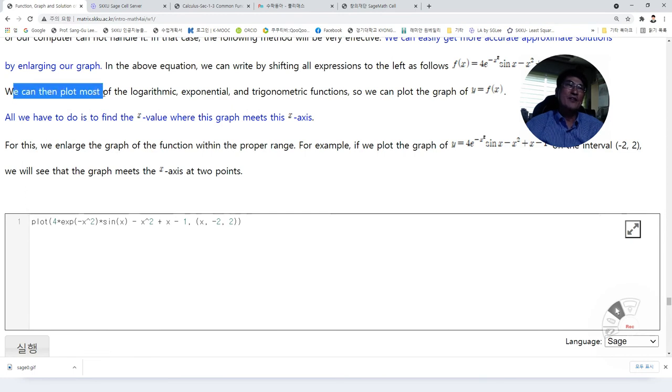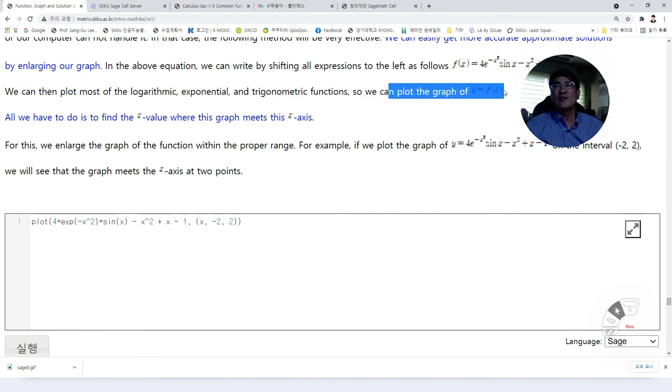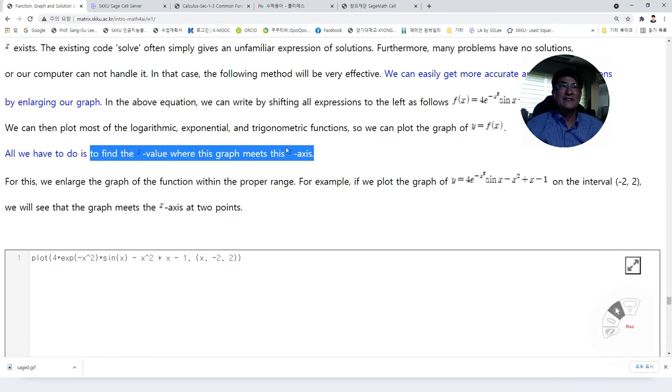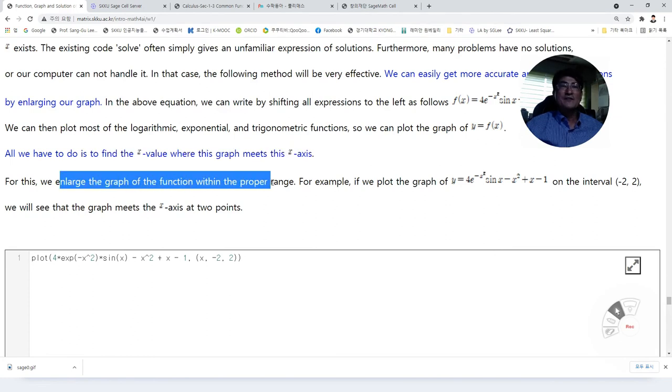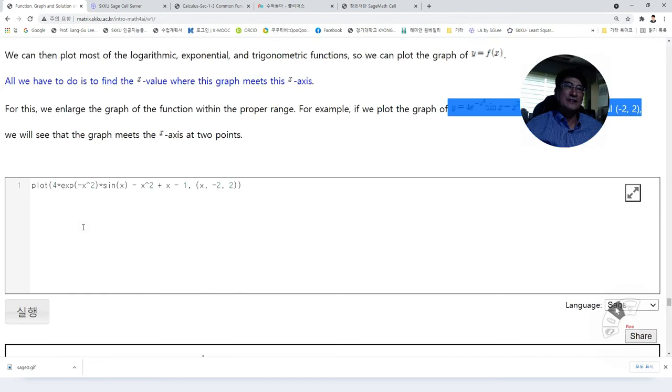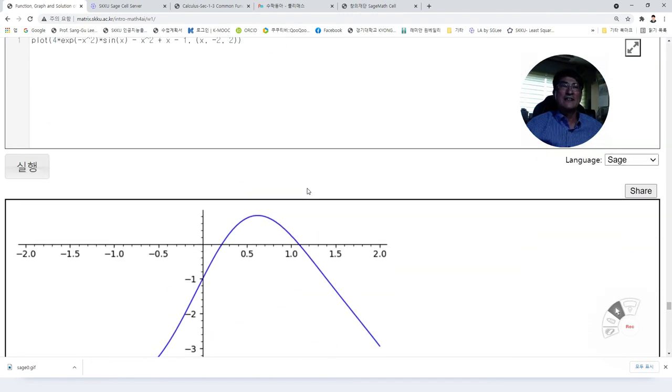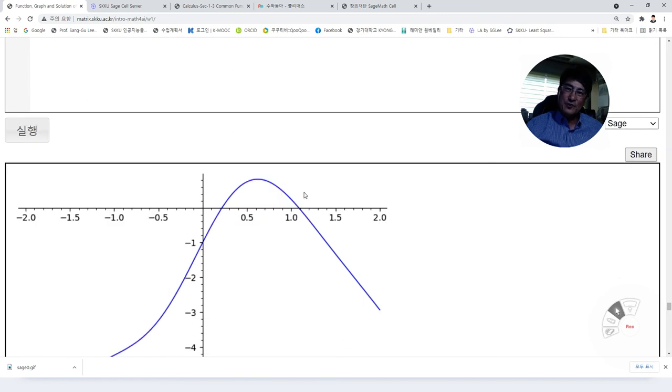We can then plot most of the logarithmic, exponential, and trigonometric functions. So we can plot the graph of y is equal to f of x. Then all we have to do is to find the value x where this graph meets the x axis. So for this, we enlarge the graph of a function within the proper range. So in this case, if we plot this on interval minus 2 to 2 first, then we will see it looks like this. Then easily we know it has two solutions here and there.